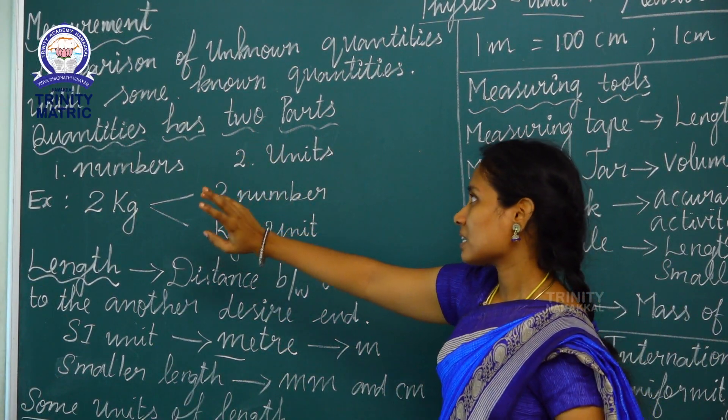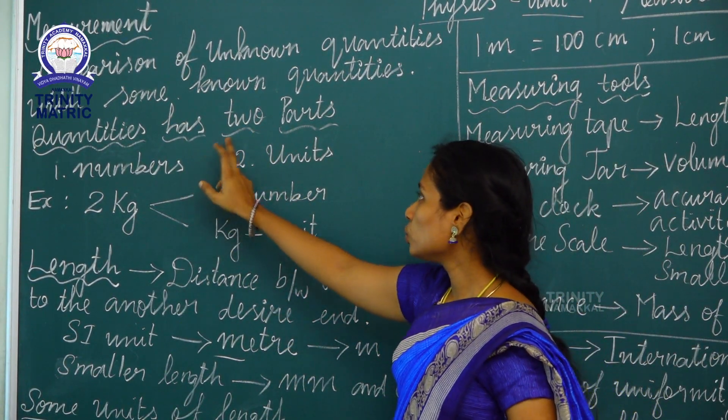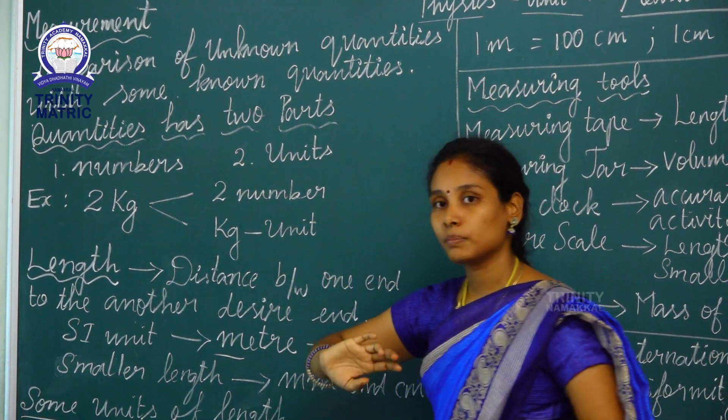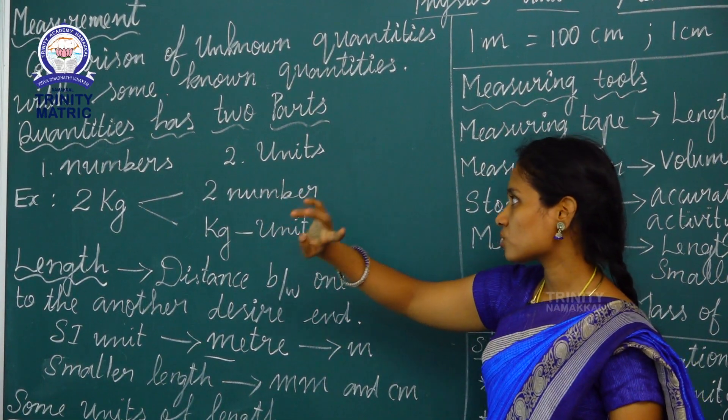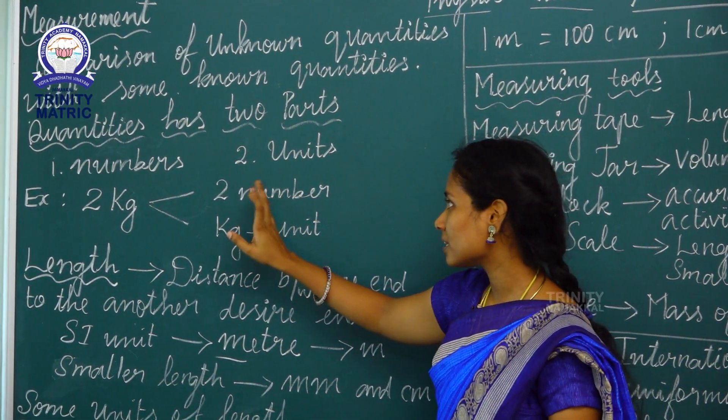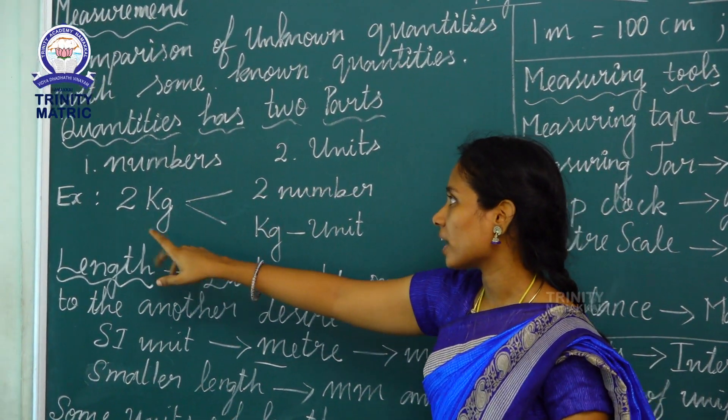Measurement has two parts. It means numbers and units. Numbers and units.